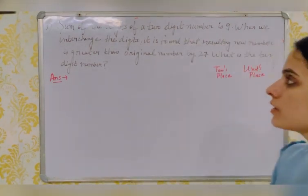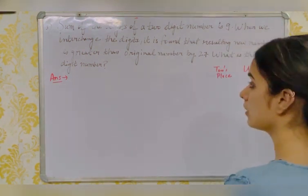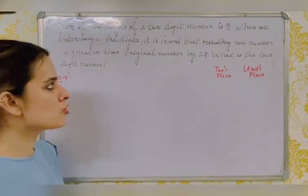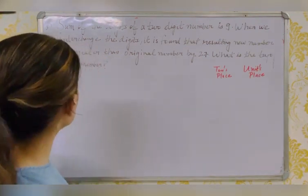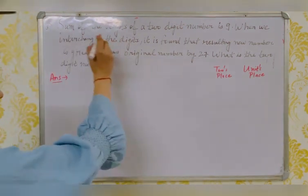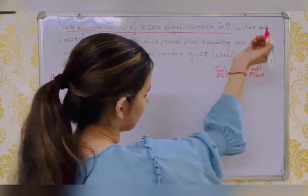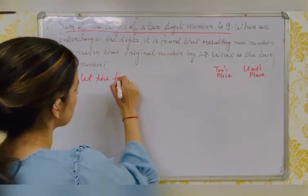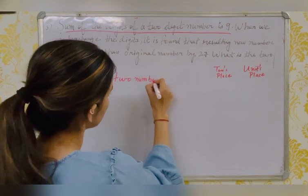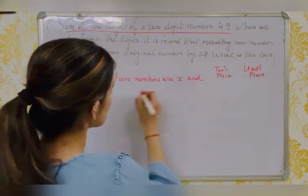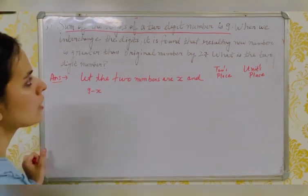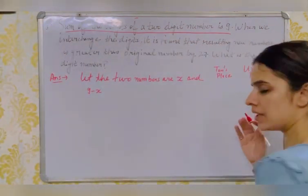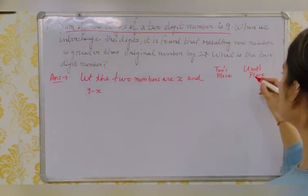Question 3: The sum of the digits of a two-digit number is 9. When we interchange the digits, the resulting new number is greater than the original number by 27. What is the two-digit number? Since the sum of digits is 9, let one digit be x and the other is 9 − x.